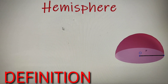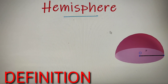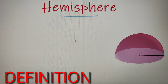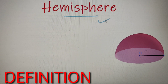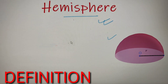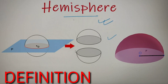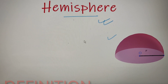By the name itself you can understand that a hemisphere is nothing but half of a sphere. A plane passing through the center of a sphere divides the sphere into two equal parts, and each part is called a hemisphere. You can simply imagine that if we have a sphere and pass a plane through its middle, then we get a hemisphere.